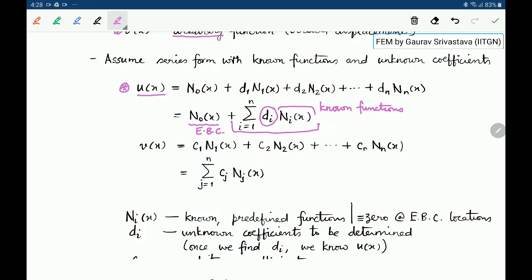Similarly, let us say we use the same set of known functions for V of X and we define it in terms of C times N, where Cs are again unknown and Ns are known.